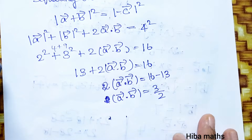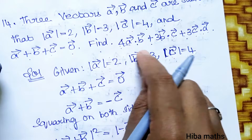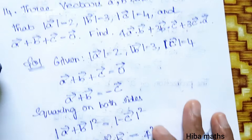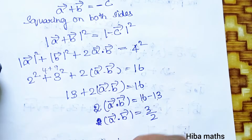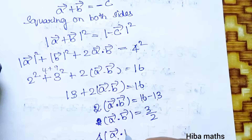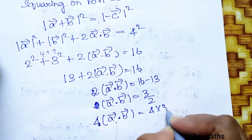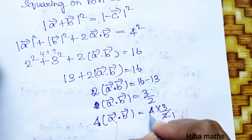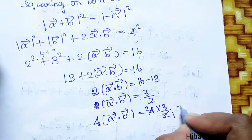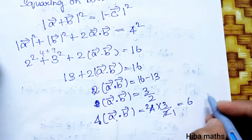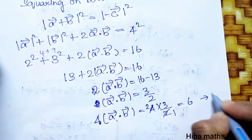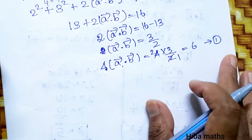Now for the first term: 4 into a vector dot b vector = 4 × (3/2) = 6. This is the first result.